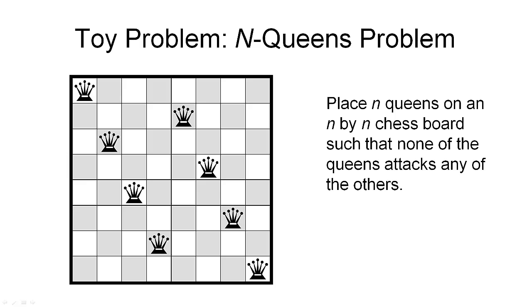The next problem is also a toy problem, and it's known as the N queens problem in general, but we will look at the 8 queens problem here. The problem is to find a configuration for 8 queens on an 8 by 8 chess board, such that none of the queens attacks any of the others.